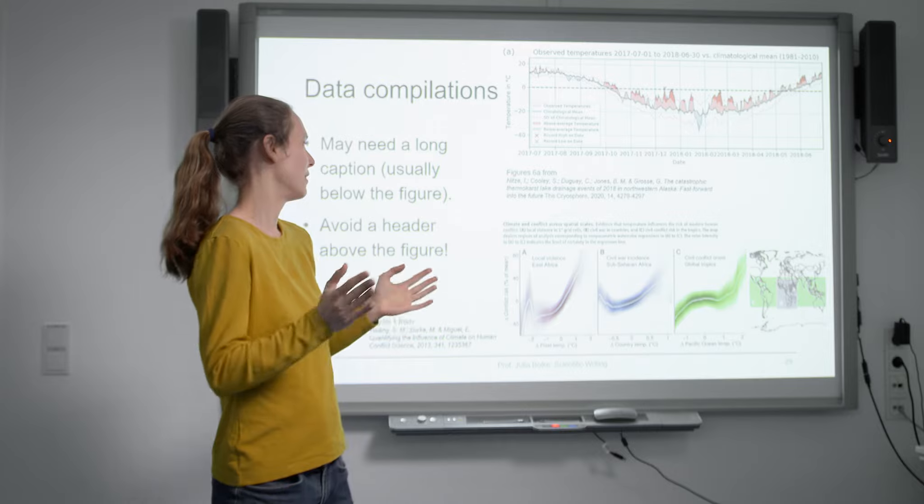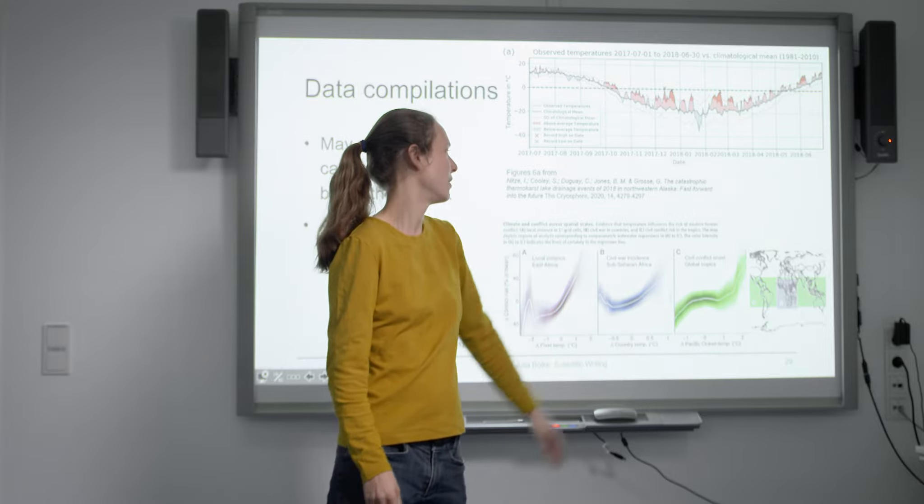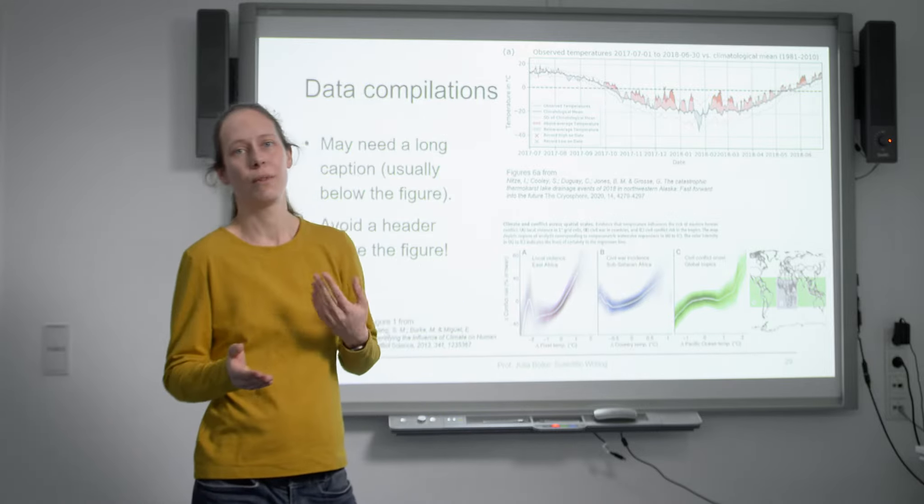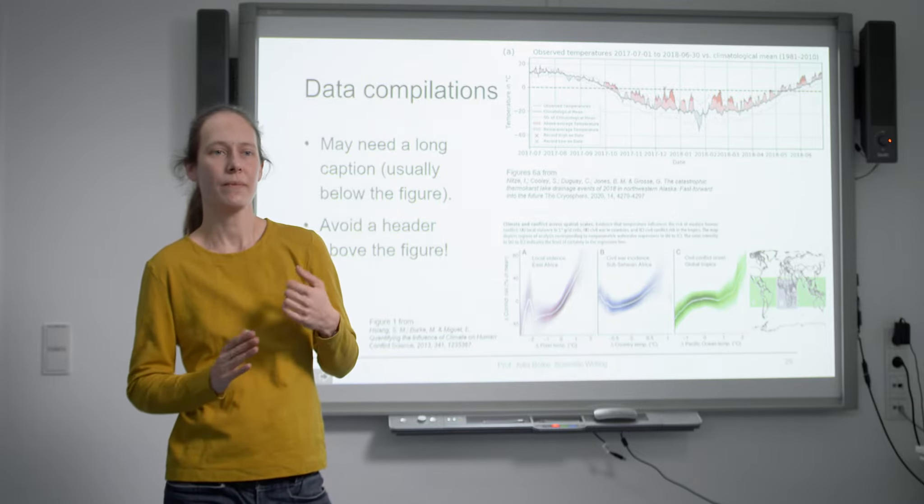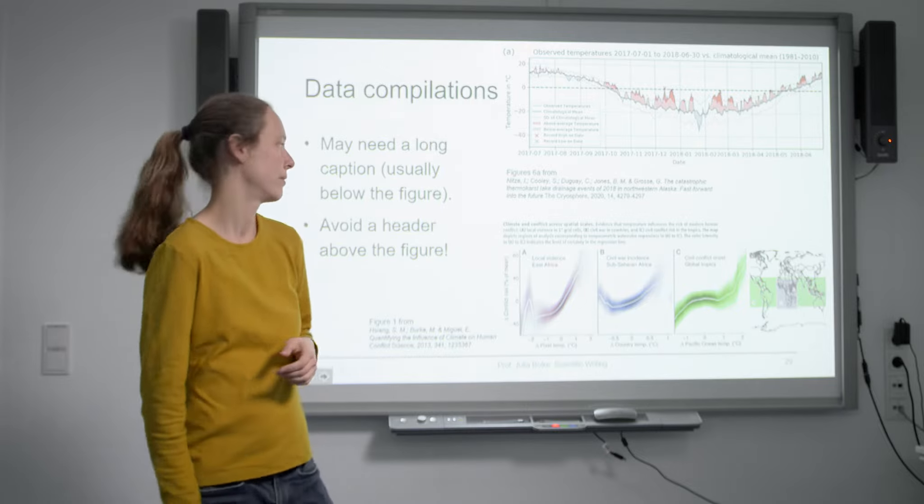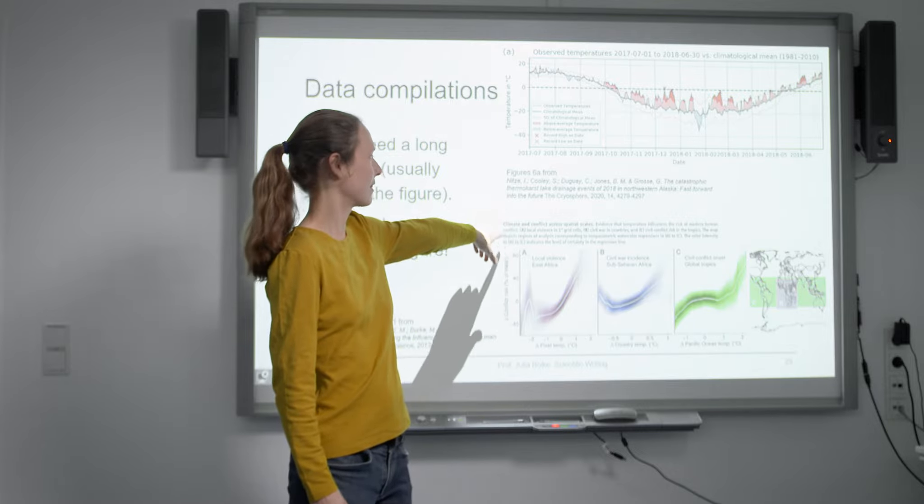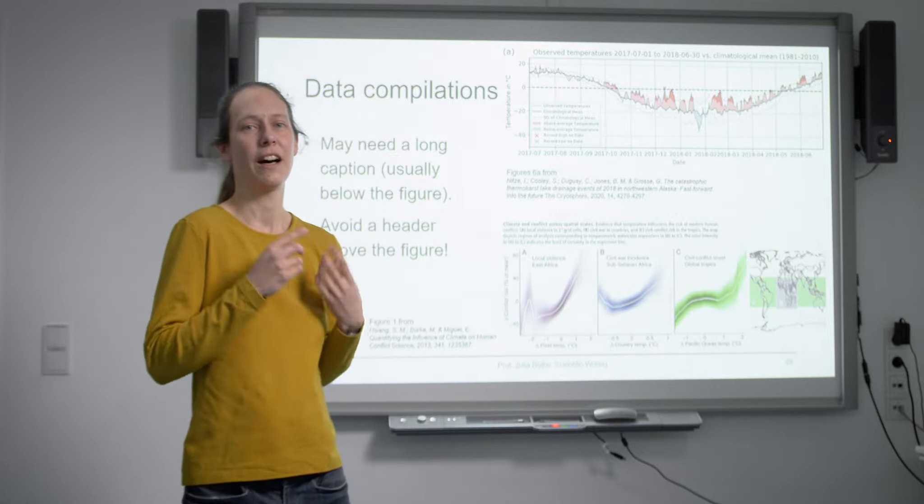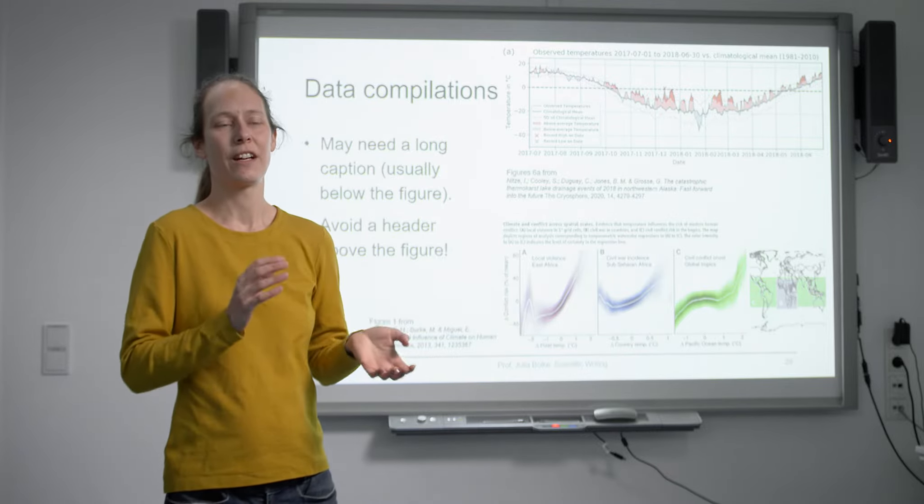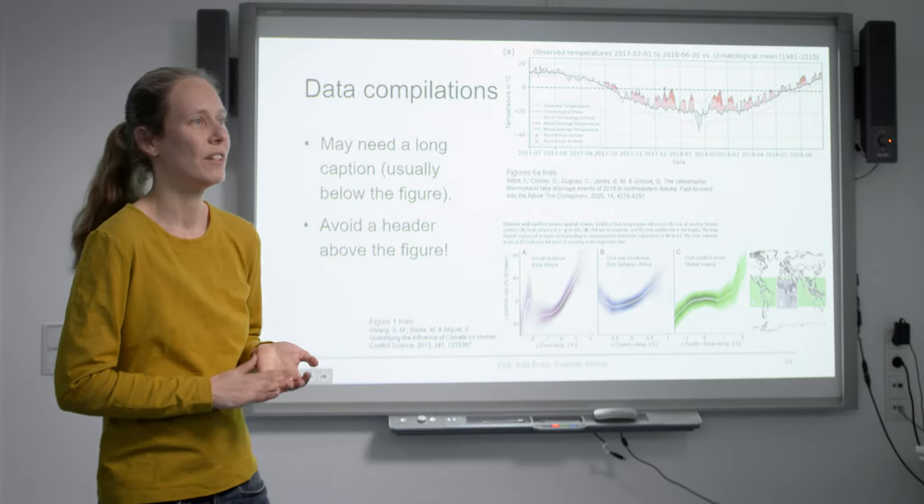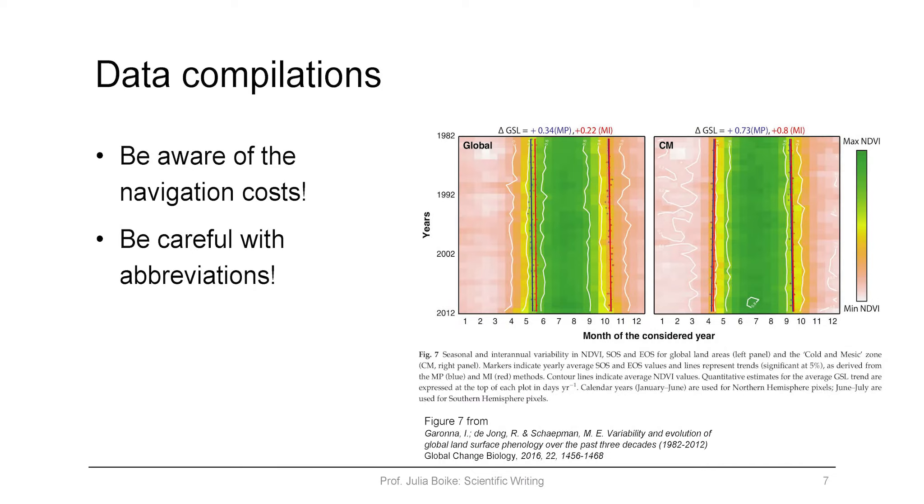They tested this on these different scales for local violence and civil wars and civil conflicts, always the onset of course because then it might take several years until the conflict is finally resolved hopefully at one point. This figure is also very special because it has a caption on top and this is only because this was the highlight figure in Science so they have a special kind of formatting for the highlight figures, but usually the caption of figures always goes below.